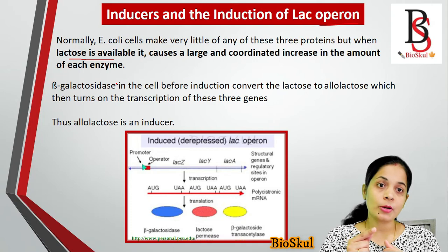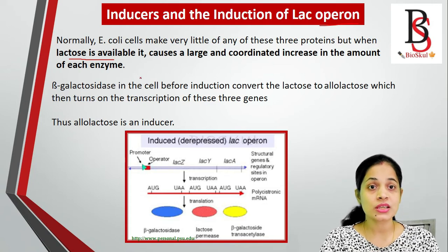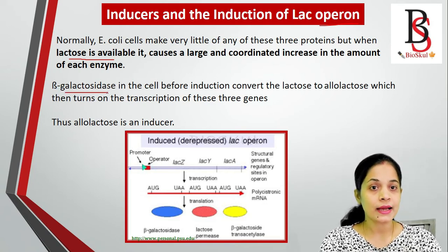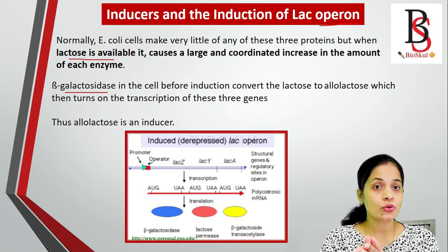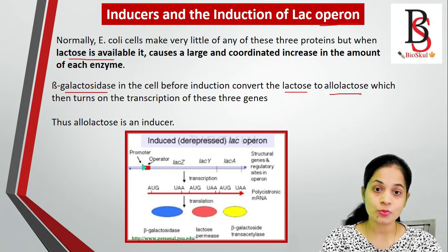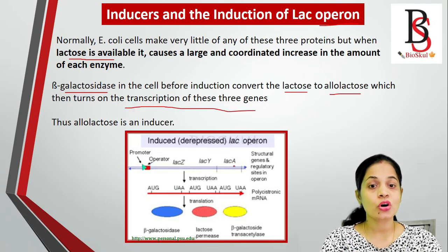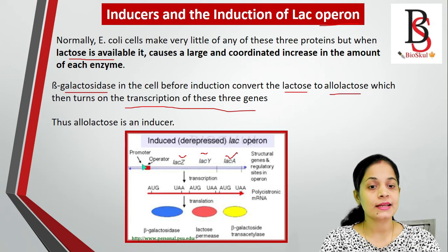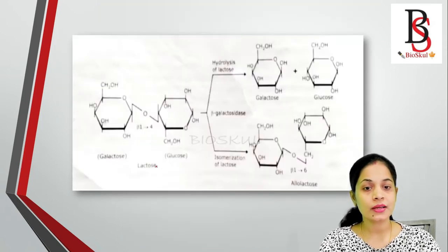When lactose enters the cell via lactose permease, it is hydrolyzed by beta-galactosidase into glucose and galactose. Beta-galactosidase also converts lactose into its isomeric form, allolactose. When allolactose is formed, it in turn enhances the transcription of the three structural genes — lac Z, lac Y, and lac A. So allolactose acts as the inducer.